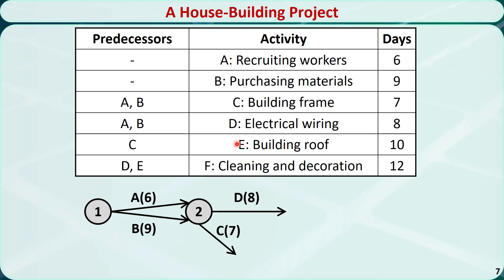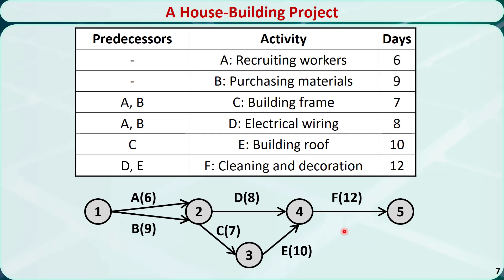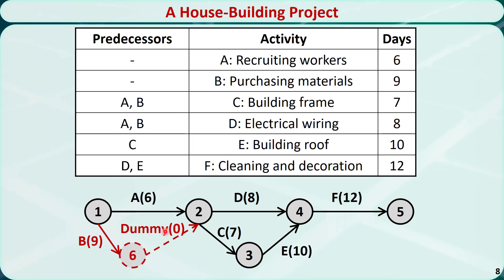After finishing building the frame (activity C), we can start to mount the roof (activity E), which takes 10 days. Finally, after the wiring and roof activities D and E are completed, we can start to clean the construction site and decorate the house (activity F), taking 12 days. The initial network violates Rule 5 because two arcs connect nodes 1 and 2, so we introduce a dummy node 6 and a dummy activity with duration 0. Then we renumber the nodes — changing them to 2, 3, 4, 5, and 6 — so that completion nodes always have larger numbers than beginning nodes.